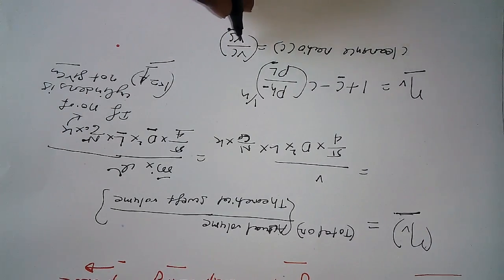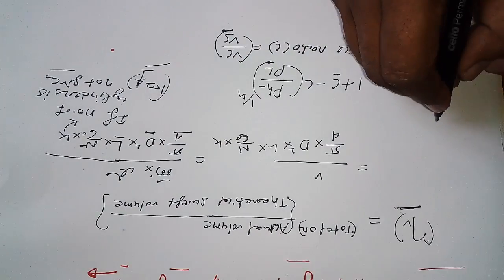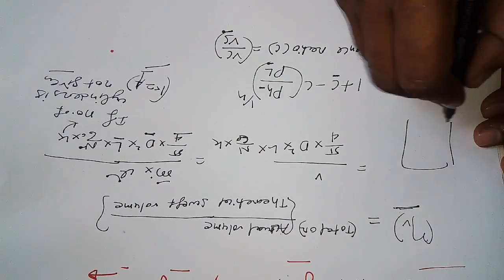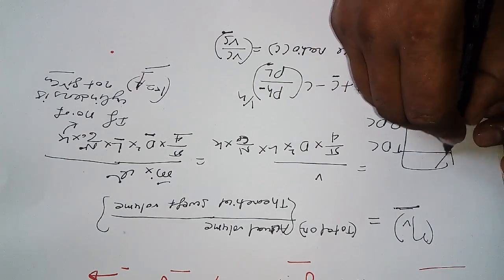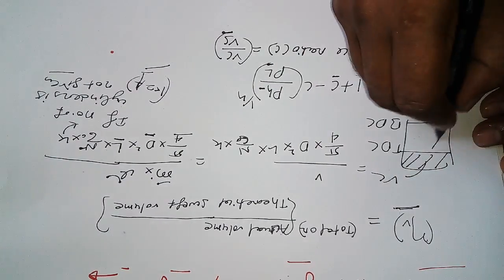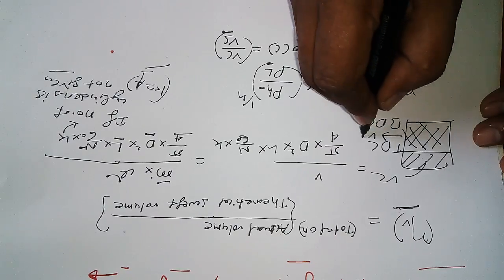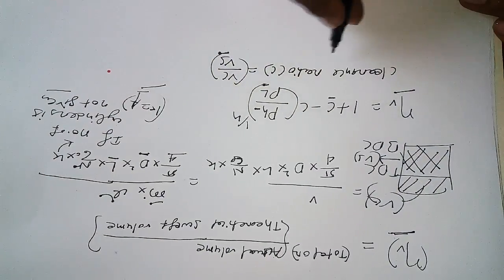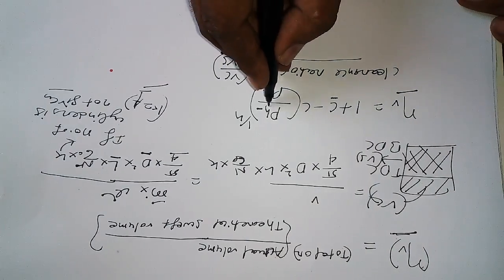Consider a cylinder with TDC (top dead center) and BDC (bottom dead center). The volume at TDC is the clearance volume VC, and the volume swept between TDC and BDC is the swept volume VS. This is the clearance ratio.